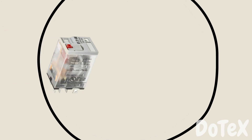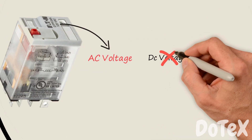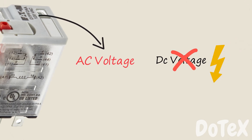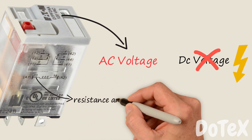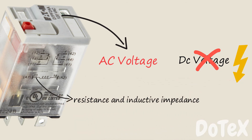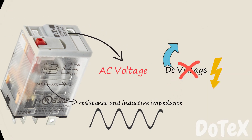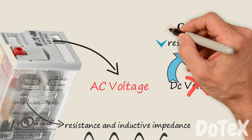A coil that is designed to run on AC voltage cannot be used on a DC system, even if the DC voltage is much lower. The coil presents both resistance and inductive impedance to an AC waveform because of the changing voltage waveform. A DC waveform only sees the resistive component, which has very small resistance, so the current draw will be very high and will damage the coil.